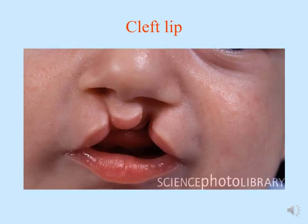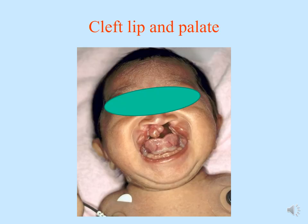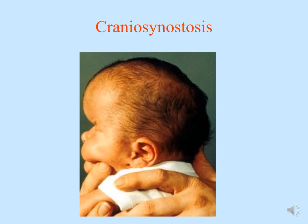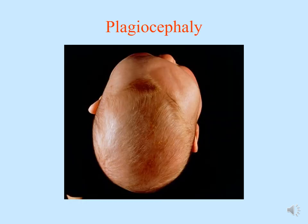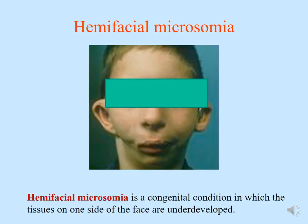The first and most common craniofacial anomaly is cleft lip. This occurs due to multifactorial causes including folic acid deficiency, wherein the lip processes fail to fuse. The second is cleft lip and palate, involving both lip and palatal fusion deficiency. Craniosynostosis involves early closure of the cranial sutures giving rise to abnormal cranial morphology. Plagiocephaly presents with depression or abnormal shape of the cranium. Hemifacial microsomia is a rare congenital condition in which tissues on one side of the face are underdeveloped.